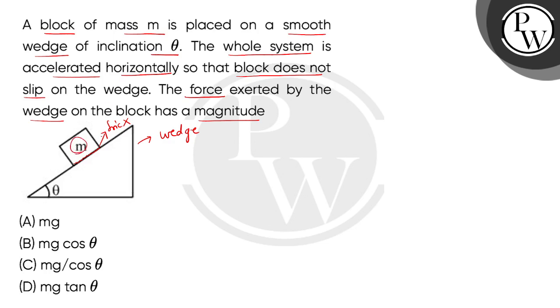When we see this whole system horizontally accelerate this way, we are accelerating it in the right direction with acceleration A. The requirement is that the whole system will accelerate such that this block does not slip on the wedge.